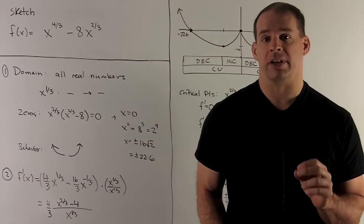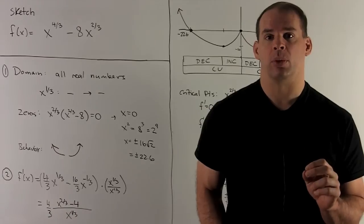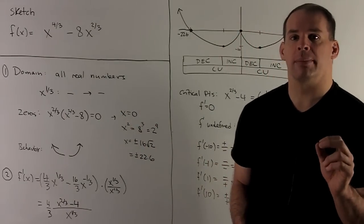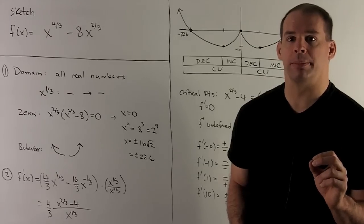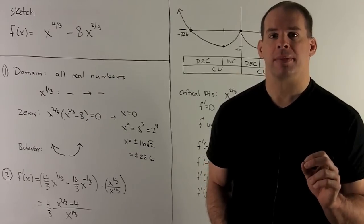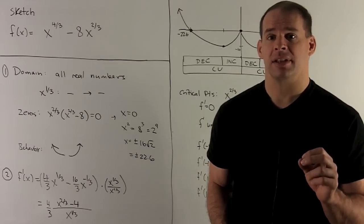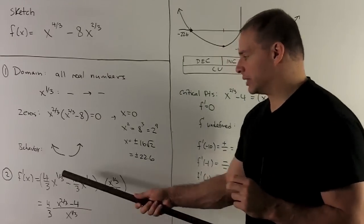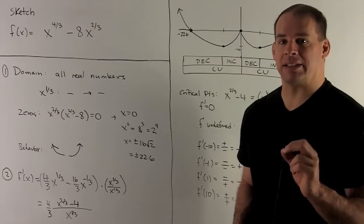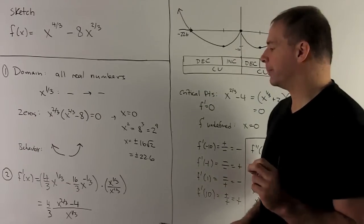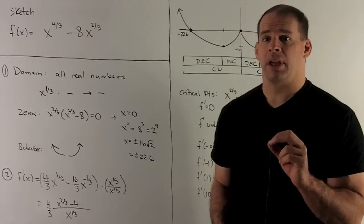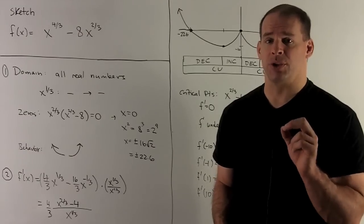Now that we've done everything without a derivative, let's take the first derivative and look for critical points and regions of increasing and decreasing. For the first term, 4/3 comes down and the exponent becomes 1/3, giving (4/3)x^(1/3). For the second term, 2/3 comes down giving -16/3 x^(-1/3). To eliminate the negative exponent, multiply top and bottom by x^(1/3), then factor out 4/3, leaving (4/3) · (x^(2/3) - 4) / x^(1/3).